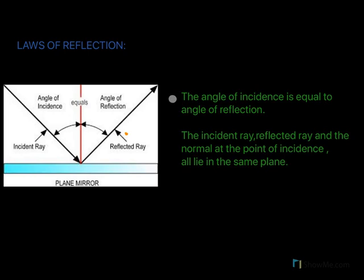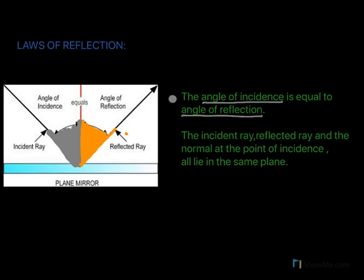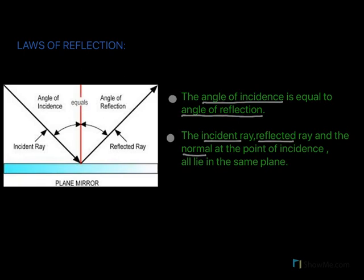The laws of reflection: the first law states that the angle of incidence is equal to the angle of reflection. So if the angle of incidence is 30 degrees, the angle of reflection is also 30 degrees. The second law states that the incident ray, the reflected ray, and the normal at the point of incidence all lie in one plane.